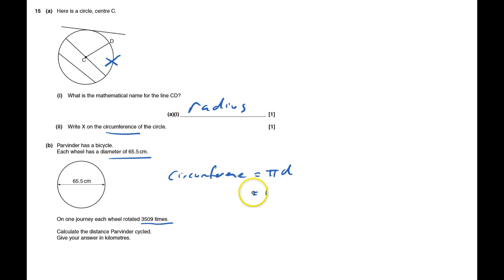So the circumference of that will be pi times the diameter. It's giving me 65.5, and that is 205.77, measured in centimeters.